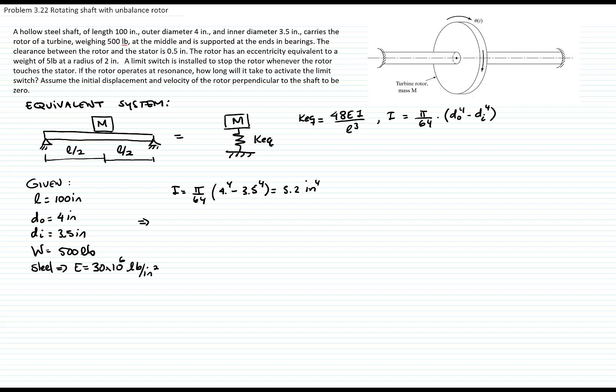Now I calculate the equivalent constant for that spring, which is 48 times 30 times 10 to the sixth times 5.2 divided by 100 cubed. That gives me a value of 7,488. I'm not writing all the decimals, but I'm keeping all the decimals for further calculations.